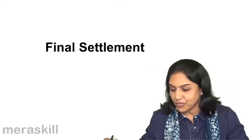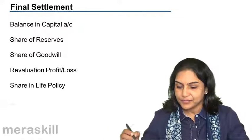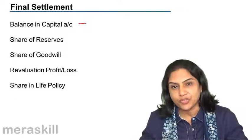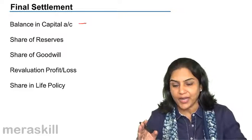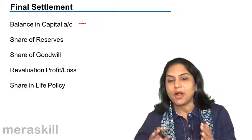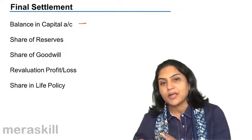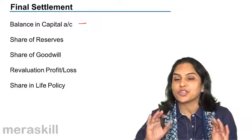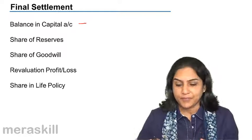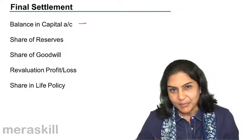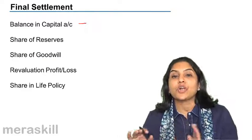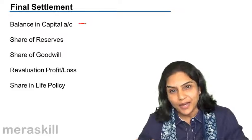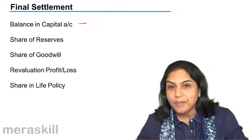What are the items involved? Obviously, the balance in the capital account belongs to the retiring partner. The final amount which will be paid off to the retiring partner — if there is not enough money in the business to pay this immediately, it is sometimes transferred to a loan account and the partner is paid interest until such sum is paid off fully.